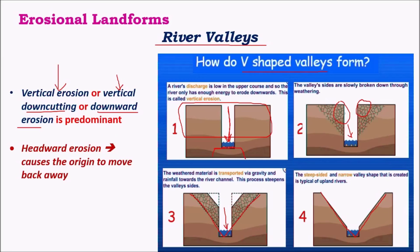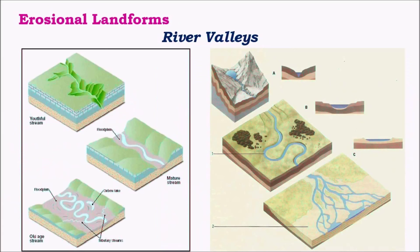The source of the river shifts backwards due to headward erosion. If the source was originally at one position, the heavy flow of water quickly erodes the soil at that location, shifting the source backwards. Successive erosion keeps shifting the source backwards. The formation of river valleys is divided into three stages based on the kind of erosion and depositional work done by the river.